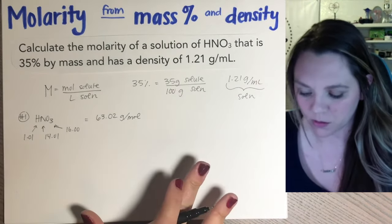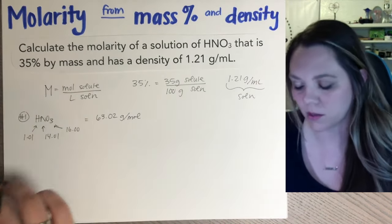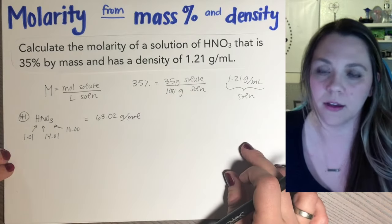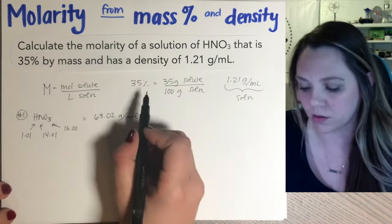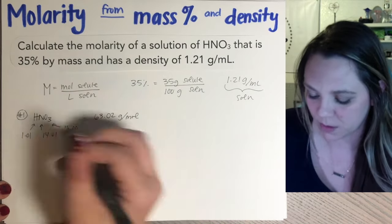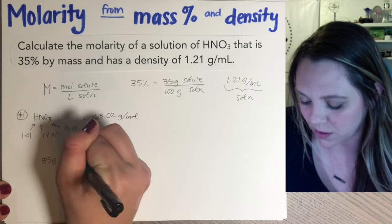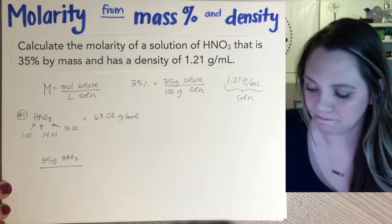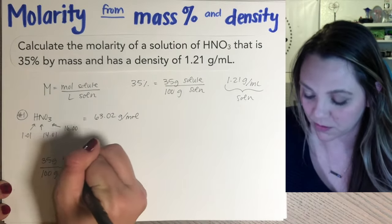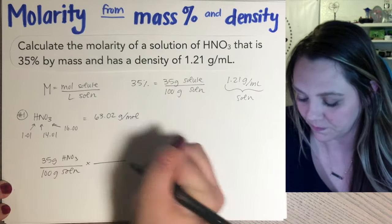Alright. So now that we have that, we can basically just do one long conversion. One long line of work. So we'll start with our mass percent. So you're going to start with 35 grams of HNO3 divided by 100 grams of solution.